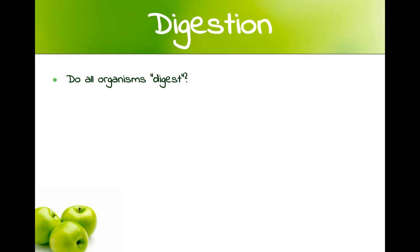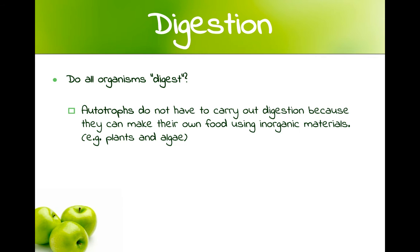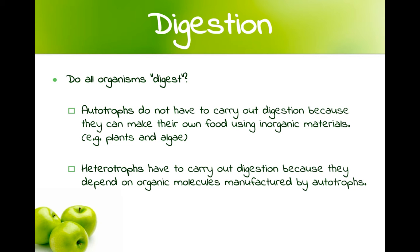Do all organisms digest? Autotrophs, which make their own food using inorganic materials, don't have to carry out digestion because they're directly making their own food from inorganic materials. They don't have to eat, therefore they don't have to digest. Examples of this are plants and algae. Whereas heterotrophs have to carry out digestion because they depend on organic molecules first manufactured by autotrophs, so they need to break it down to reuse it in a way that works for their body.